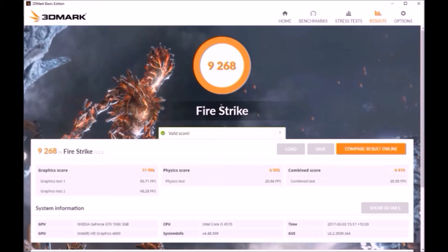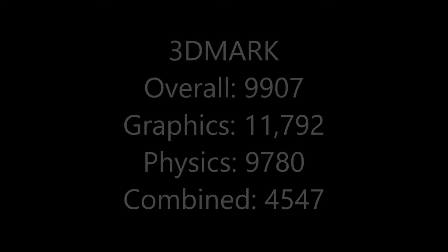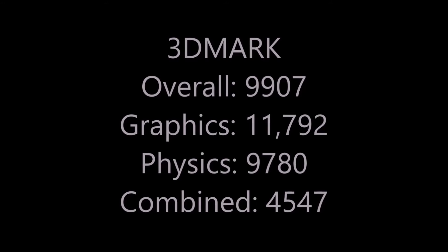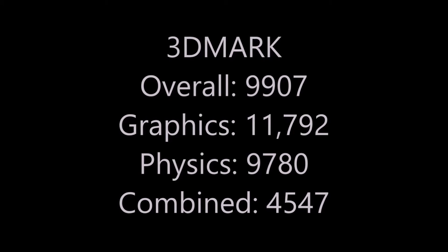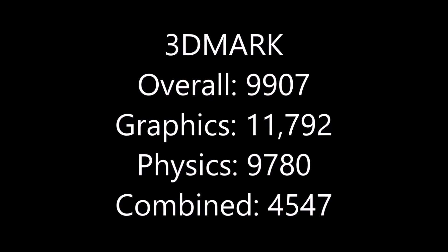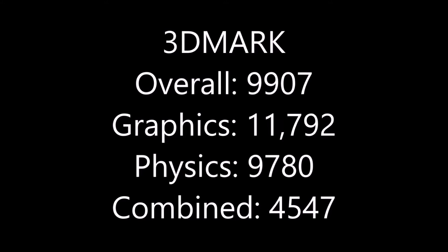Alright, so we've finished the Fire Strike benchmark now. The GTX 1060 got a score of 9268 overall. Bear in mind, these systems have two different CPUs, so we'll only be really looking at the graphics score. The 1060 got a graphics score of 11,996, whereas on the R9 290 system it got an overall of 9,907, but the graphics score was slightly lower at 11,792. The reason for the big difference in the overall score is that the 1060 was run on an i5-4570, whereas the R9 290 was run on an i7-3770. The extra CPU performance contributed to the overall score, but as you can see from the graphics scores, both cards were really, really close.